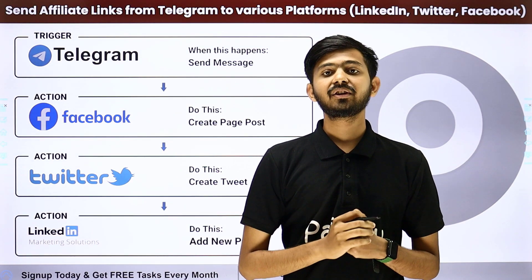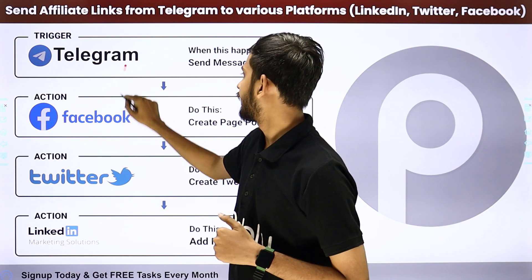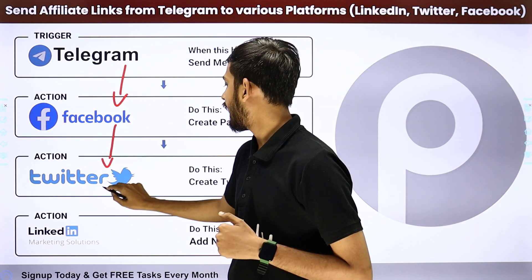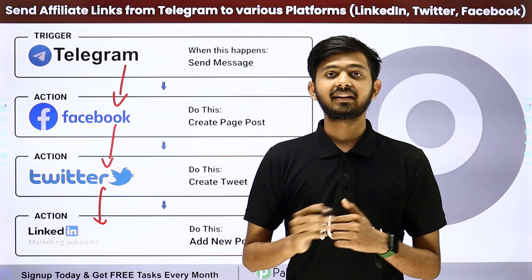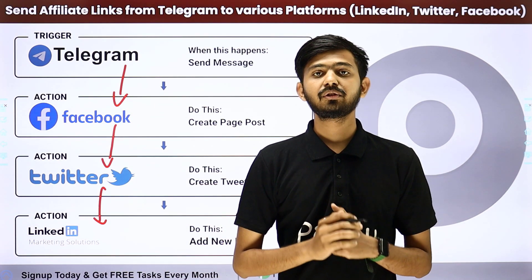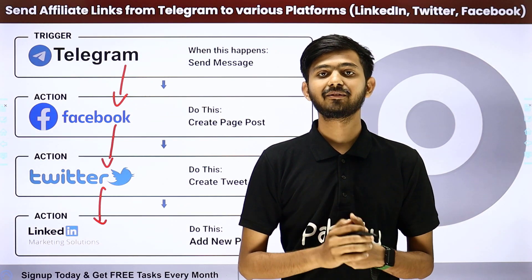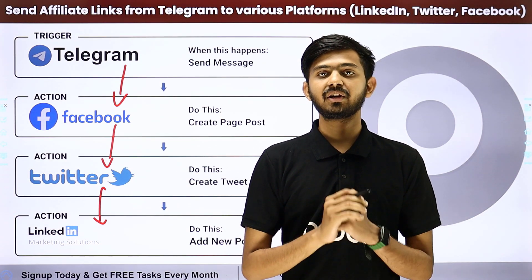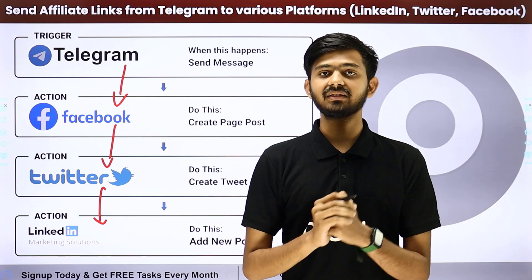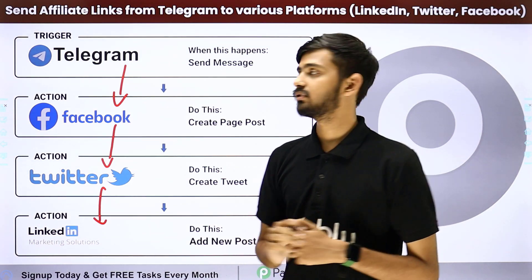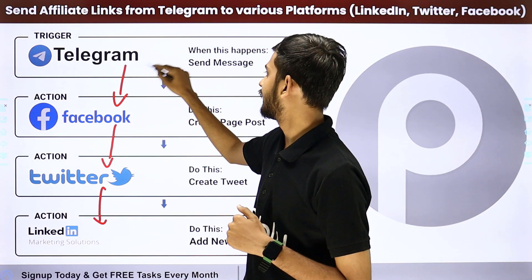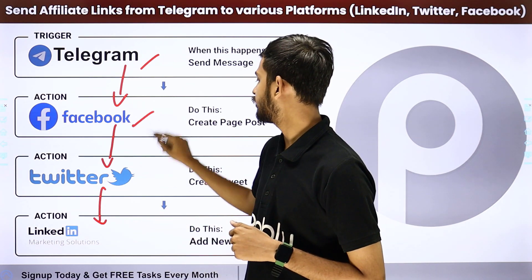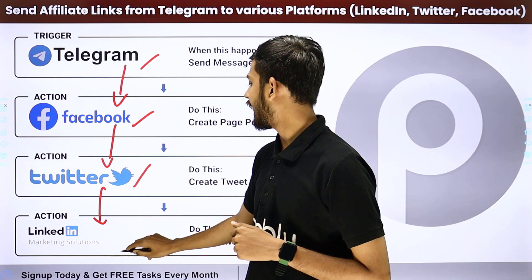Our objective is that whenever we get a new affiliate link on our Telegram group or channel, we want to use this link to create a new post on our social media such as LinkedIn, Facebook, and Twitter. For that, we are going to create an integration between Telegram, Facebook, Twitter, and LinkedIn using Pabbly Connect, which is an amazing software for automation and integration. In Pabbly Connect, we are going to use triggers and actions. The trigger application will be Telegram, and the action applications will be Facebook, Twitter, and LinkedIn.